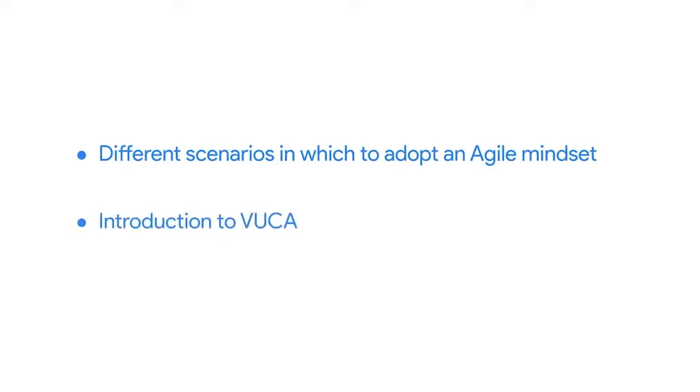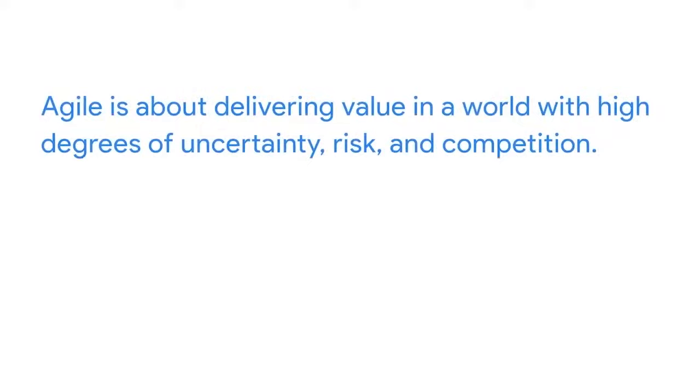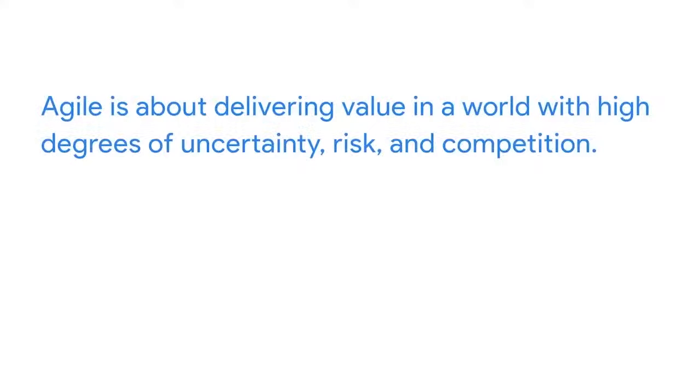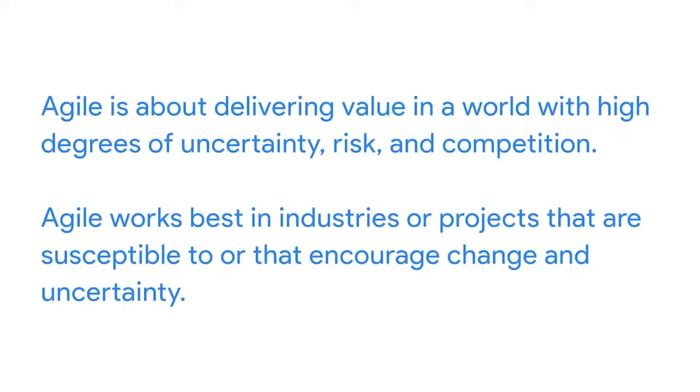Every project exists within organizations and settings with different cultures, business objectives, and industry dynamics. We'll discuss some different scenarios in which you'd want to adopt an Agile mindset, and I'll introduce you to a concept called VUCA that can help you decide which management approach is best for your project. Agile is about delivering value in a world with high degrees of uncertainty, risk, and competition. It sets a team up to react as quickly as possible to new information, new market opportunities, and even new technologies. Agile works best in industries or projects that are susceptible to or that encourage change and uncertainty.